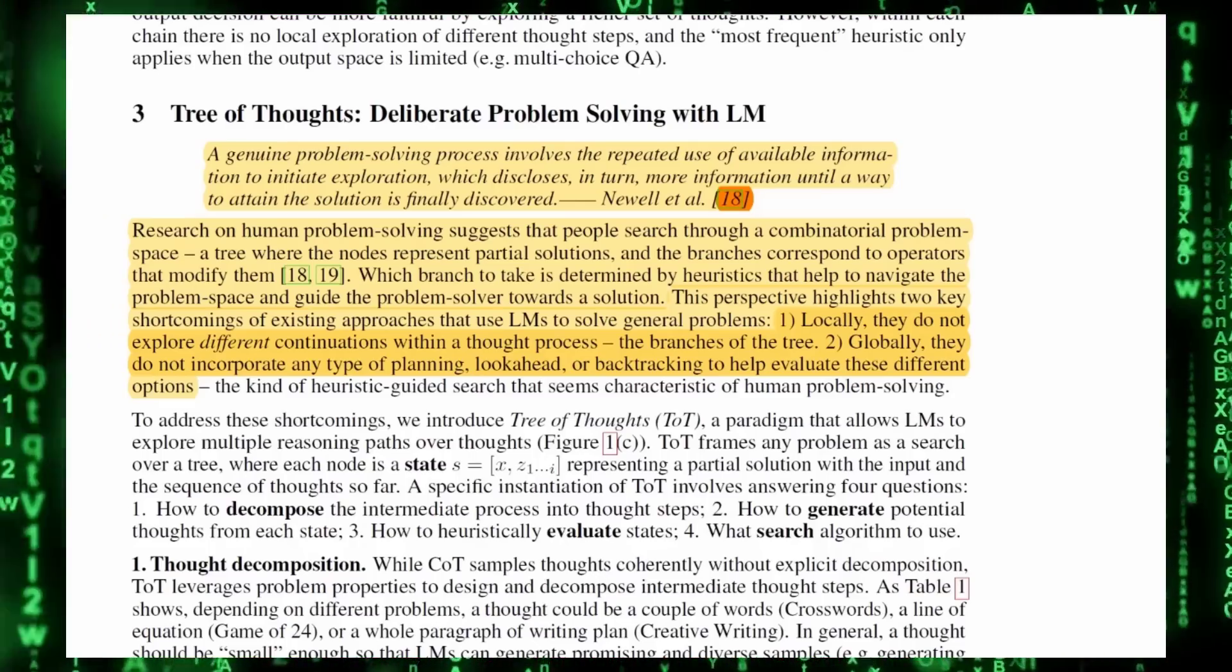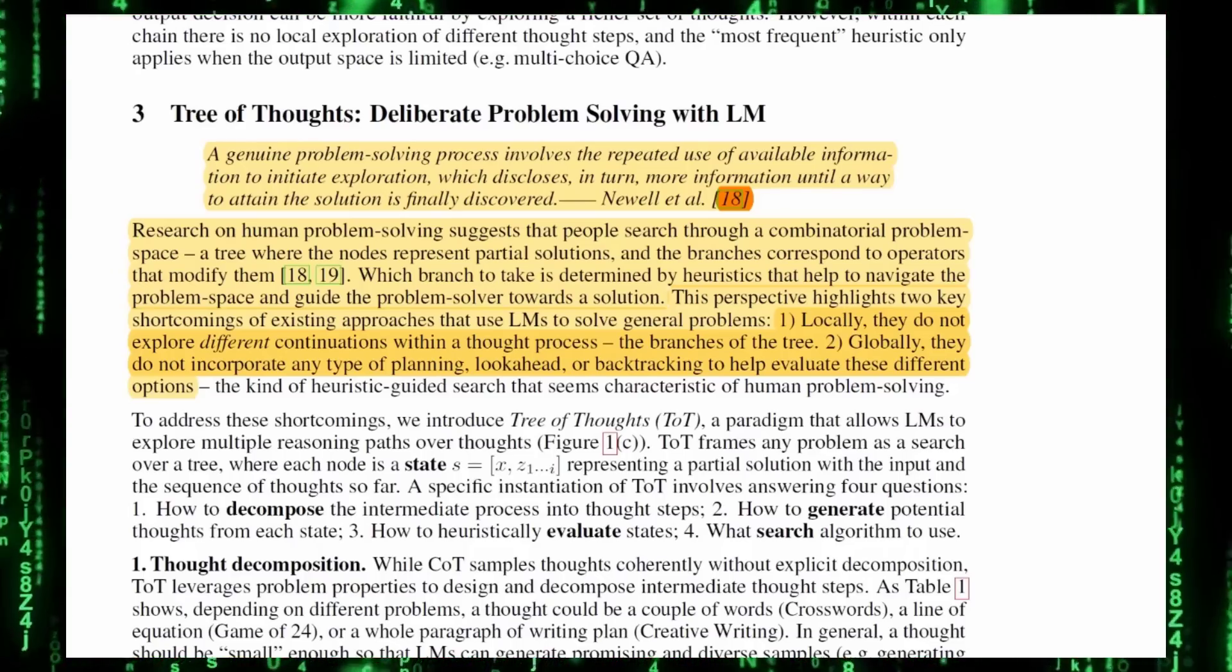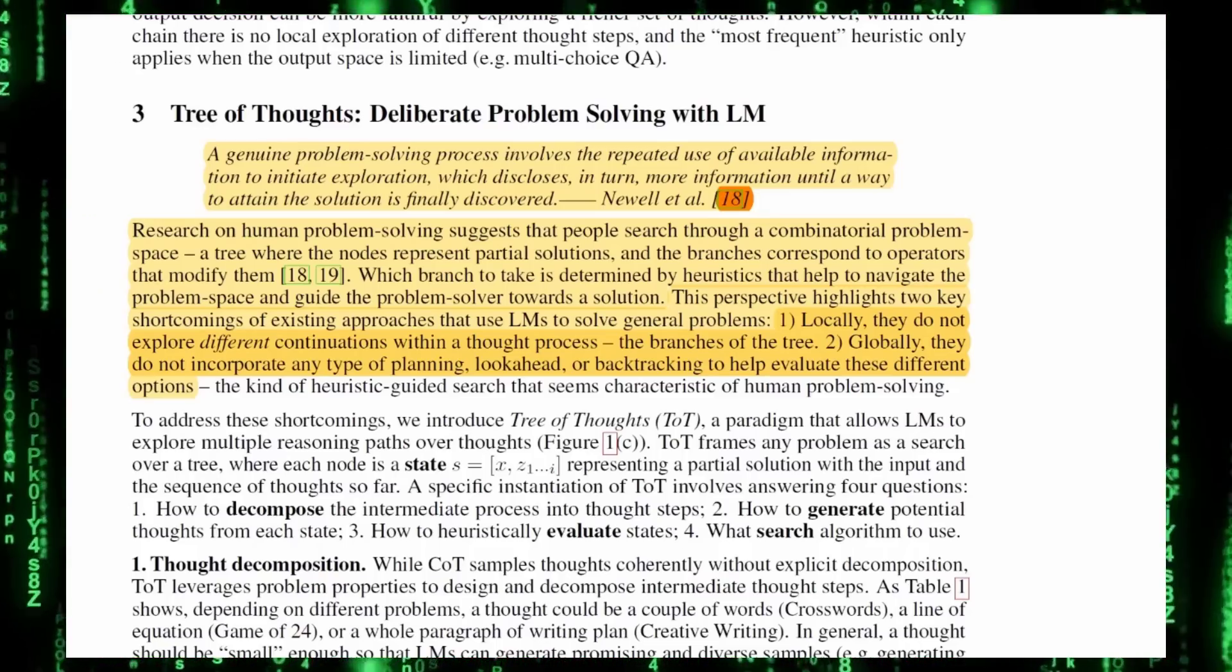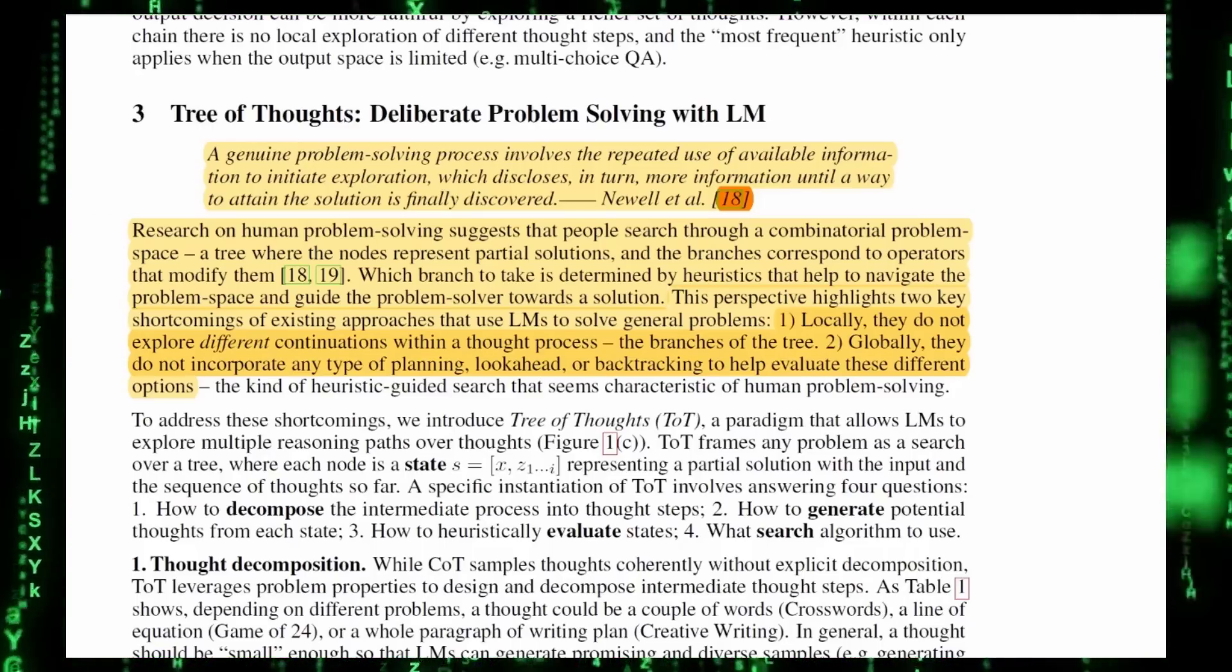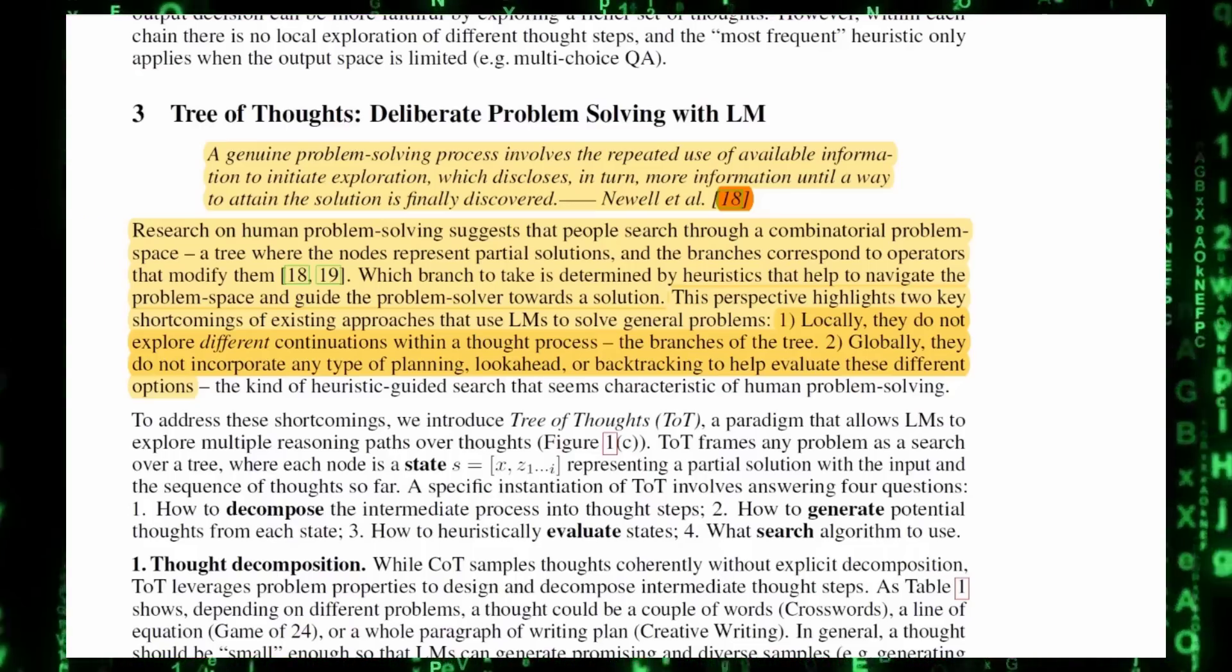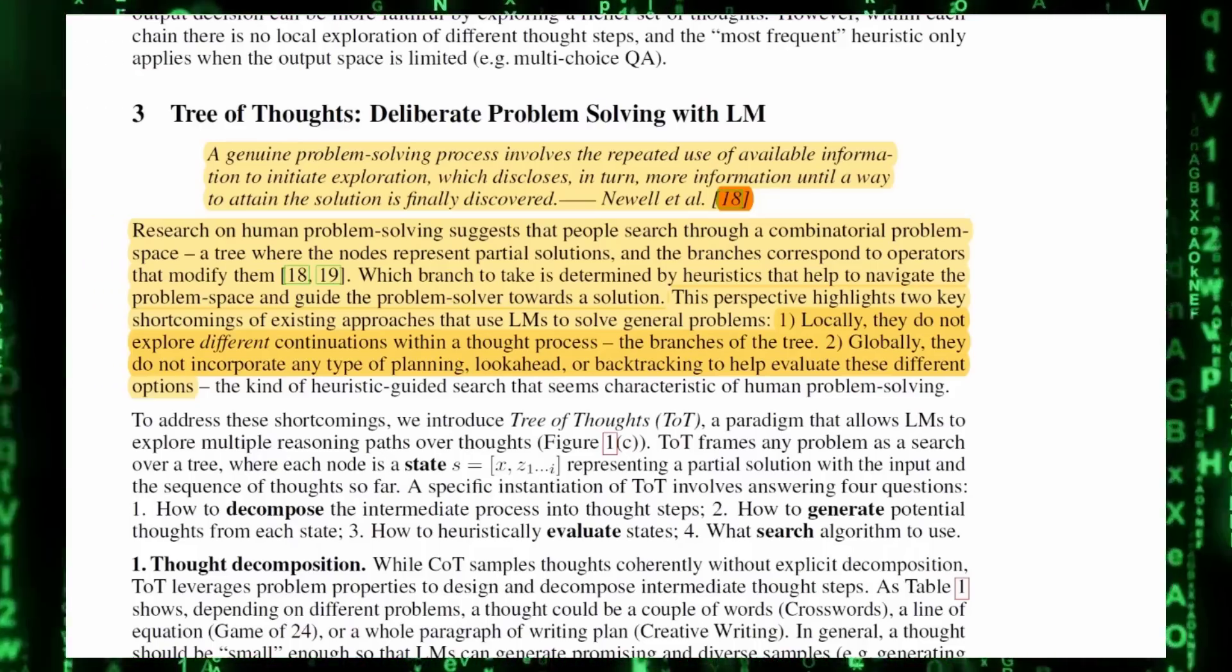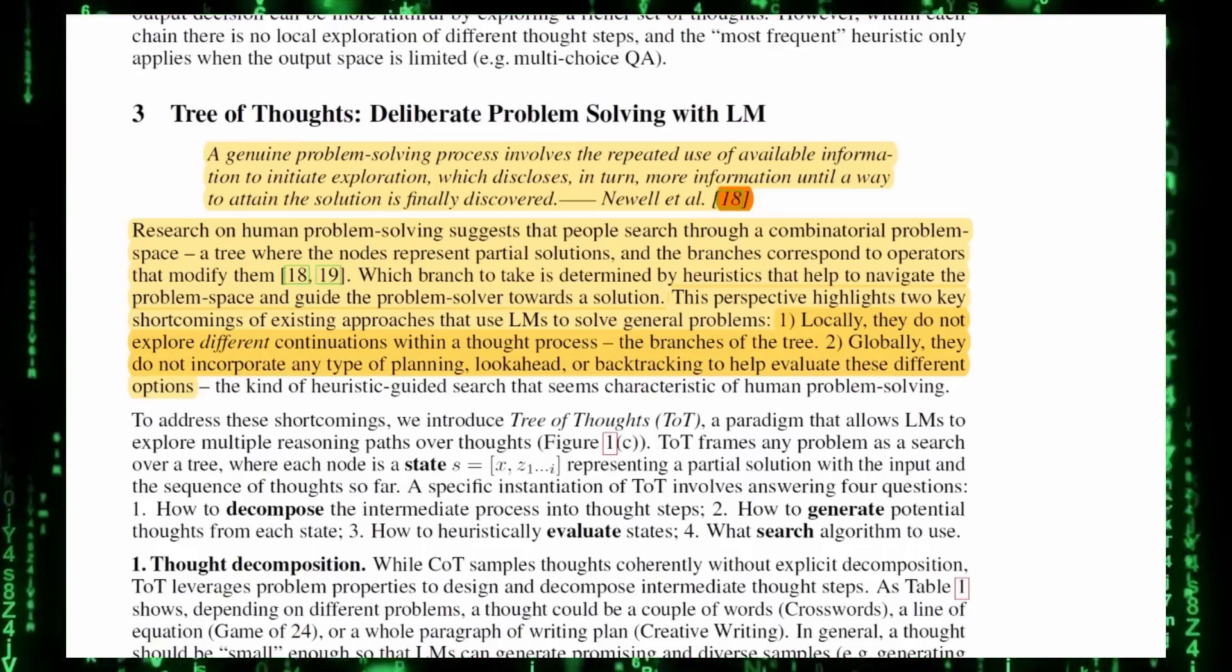So how did they come up with this Tree of Thoughts? They're referencing the work of Newell and Simon from 1972. They were pioneers in the field of AI. They studied how humans solve problems proposing that our brains work like computers. We take information, process it, and output solutions. Research on how humans solve problems indicates that people look through a large number of possible solutions. You can think of these solutions like a tree, where each point or node is a halfway solution, and the connections or branches are actions that can change these halfway solutions. People decide which action to take based on guidelines or heuristics that help them navigate through all these possible solutions and guide them towards finding an answer.